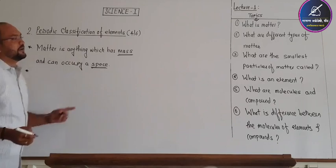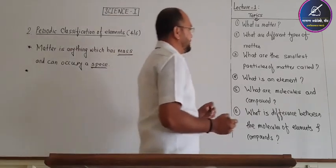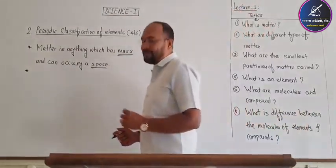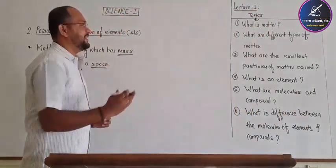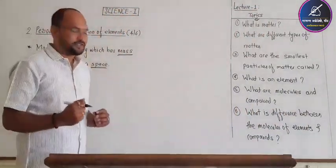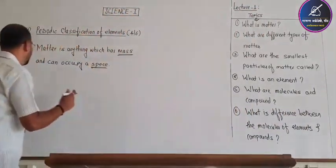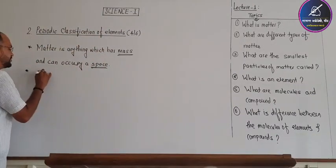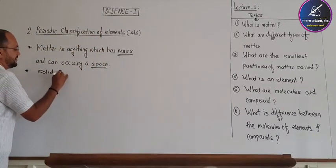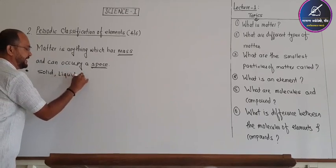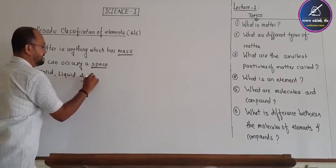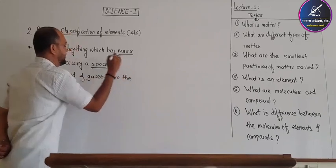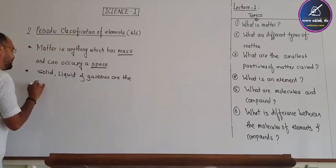Matter is of different types. Basically, matter has three states: solid, liquid, and gaseous. Solid, liquid, and gaseous are the three types of matter.